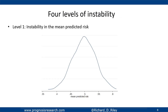First, we can think about instability at an average level — what's the instability in the mean predicted risk? We get 1,000 mean risks from 1,000 models applied to the whole population. Plotting the distribution of the mean risk across those 1,000 models, we see that on average it's 0.5 as expected, but there is uncertainty — in some models the mean risk is around 0.4, in others around 0.6. So there's instability in the average risk, but it's quite narrow — quite good precision in the mean predicted risk across different models.